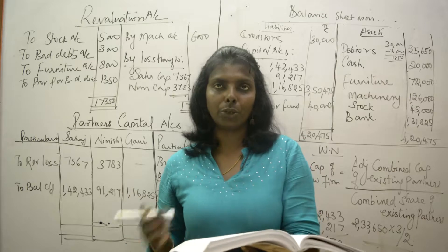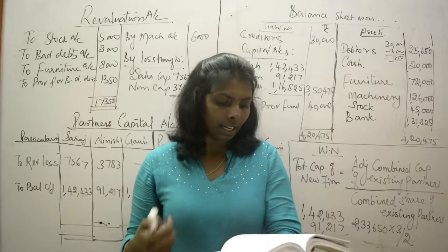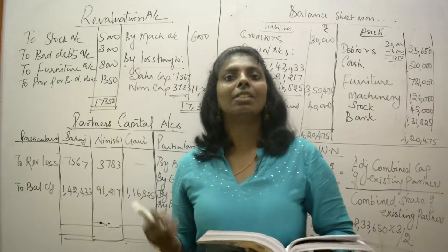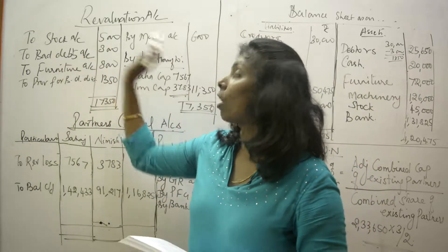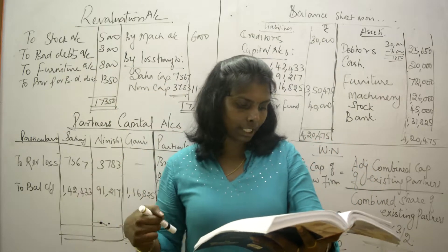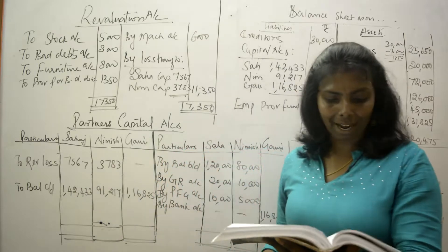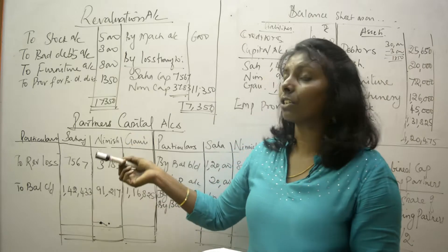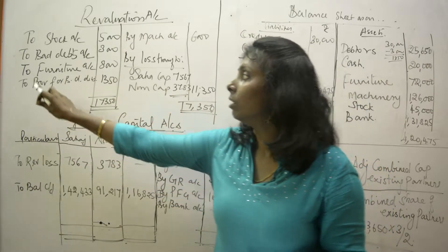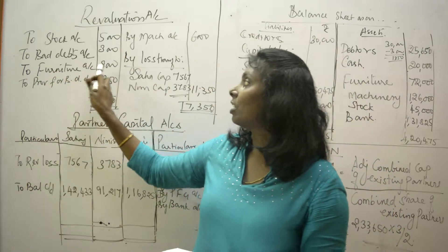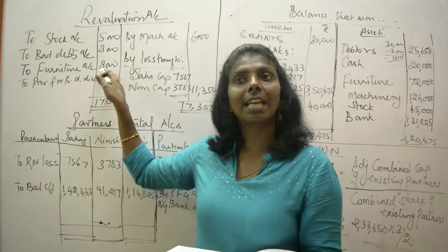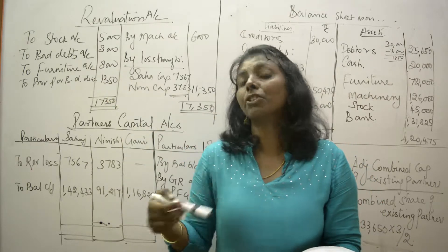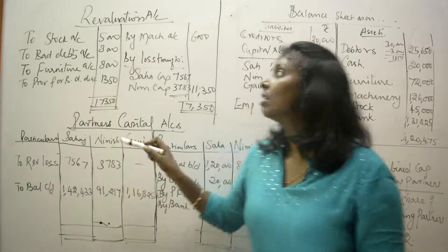On the assets side, there is no P&L or other capital losses. For the adjustments: reduce the value of stock by 5,000 — that's a reduction in asset value, so debit stock 5,000. Next, depreciate furniture by 10%: 10% of 80,000 is 8,000. Appreciate machinery by 5% — appreciation is an increase in value, so credit machinery: 5% of 1,20,000 gives 6,000.